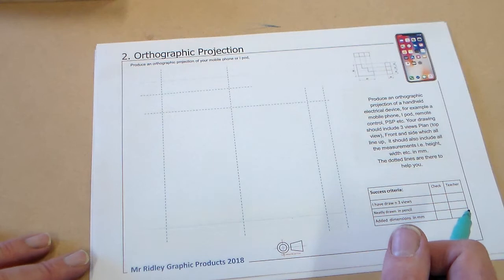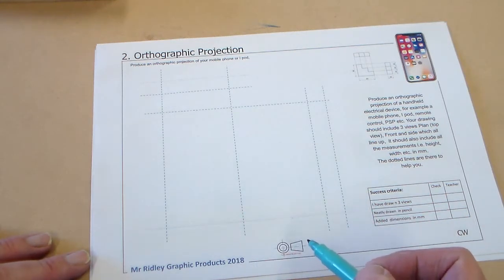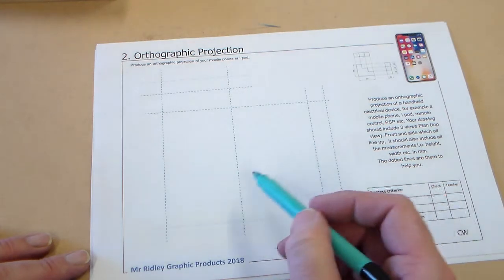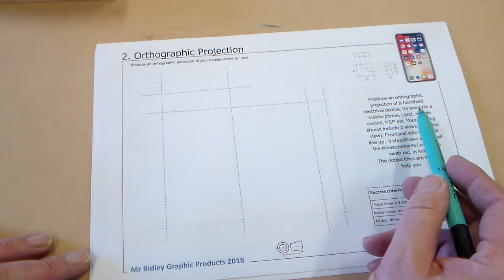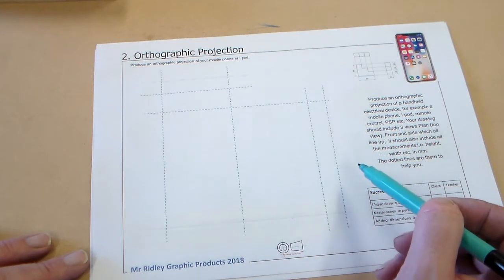Okay, now we're on to exercise two. Now for the second task, what I would like you to do is produce the three views of a handheld electrical device. I'm not going to say a mobile phone, it could be an iPod.